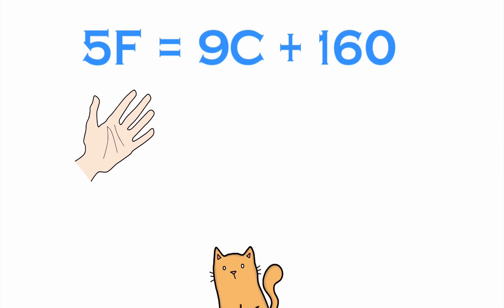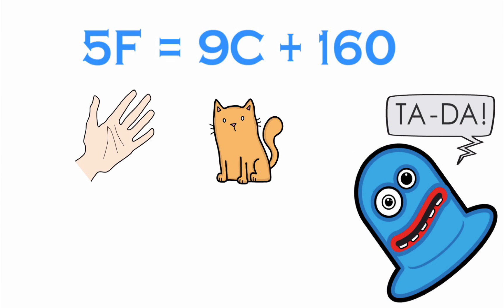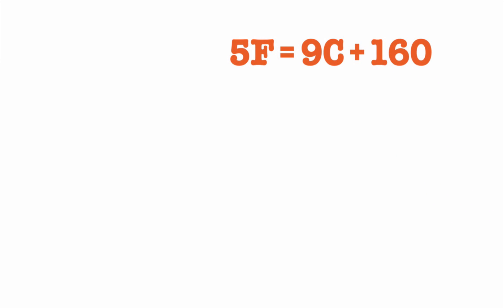So let's look at our formula again: 5F equals 9C plus 160. With the images, it is much easier to remember. Now let's try a couple of exercises.